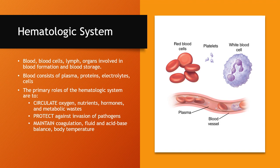The blood itself consists of the plasma, the proteins, the electrolytes, and the cells that all circulate throughout the vascular system. The primary roles of the hematologic system include the circulation of oxygen, nutrients, hormones, and metabolic wastes. The system protects against the invasion of pathogens and maintains coagulation, fluid and acid-base balance, and body temperature.